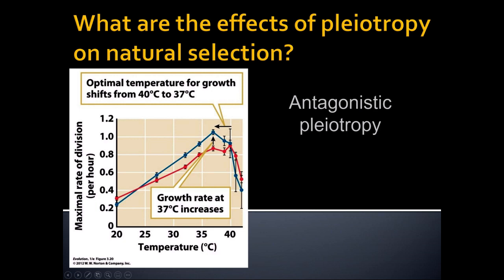Pleiotropy is where one gene has more than one job. Some genes have two, three, four, or even more than a dozen different functions — they might function in different tissues, different metabolic states, or different life stages. Genes that have more than one job tend to be more constrained. The effect of pleiotropy on natural selection is that it tends to constrain it more.